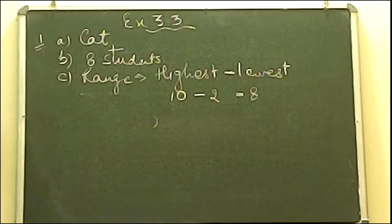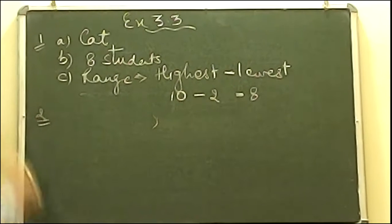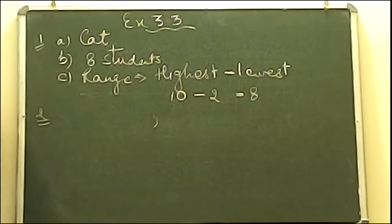Let us move on to the second question, which is figure number 3.4. The question is telling read the bar graph 3.4 which shows the number of books sold by a bookstore during 5 consecutive years, and you have to read the bar graph and answer the following questions.